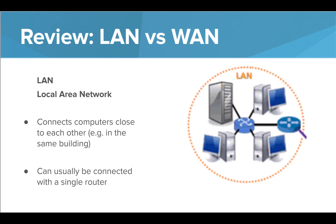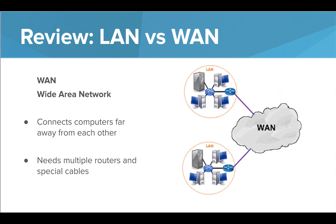We've already learned about a LAN, or Local Area Network. Devices in this type of network are in close range of each other and connected to the same router. A WAN, or Wide Area Network, is different in that it connects computers that are far away, usually connecting different LANs. This is a more difficult setup that will make use of several routers. The Internet is an example of a WAN.